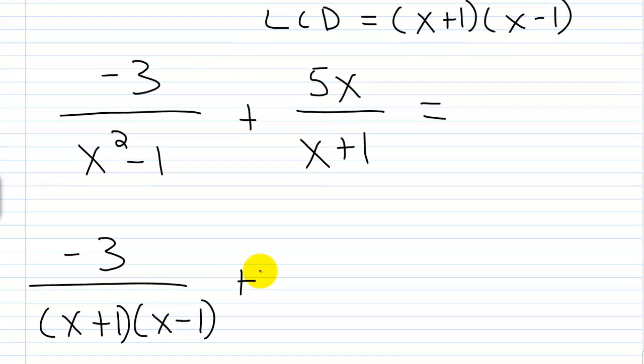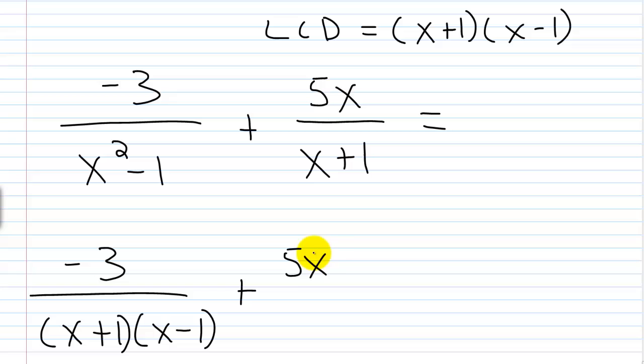Then we have plus, I'll have 5x. And what I'll need to do, this is over x plus 1. I'll need to multiply this rational expression by this x minus 1 over x minus 1, okay?